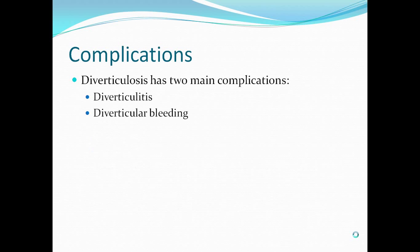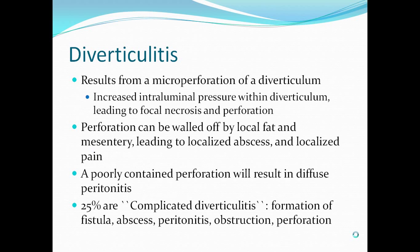There are two main complications of diverticulosis you should be aware of: diverticulitis and diverticular bleeding. Diverticulitis results from a microperforation of a diverticulum, caused by increased intraluminal pressure within the diverticulum, which leads to focal necrosis and perforation. Perforation can be walled off by local fat and mesentery, leading to a localized abscess and localized pain. A poorly contained perforation will result in diffuse peritonitis, with bowel contents and fluid spreading throughout the abdomen.